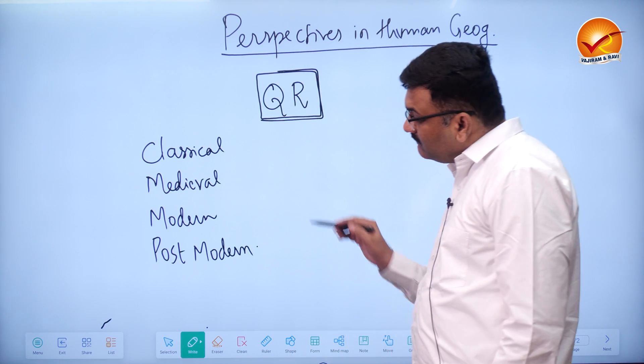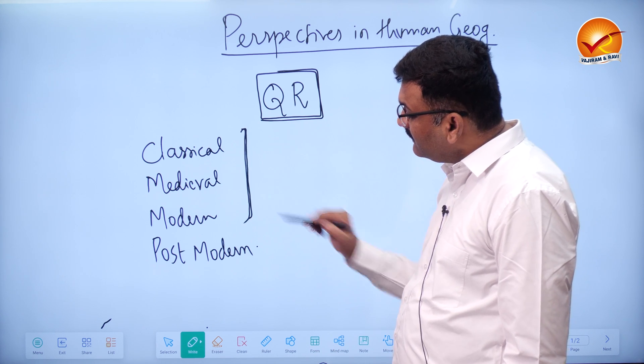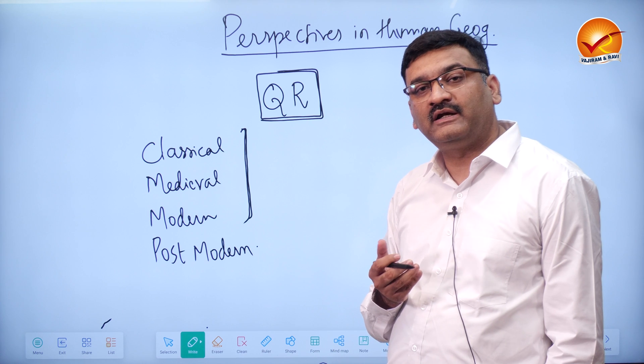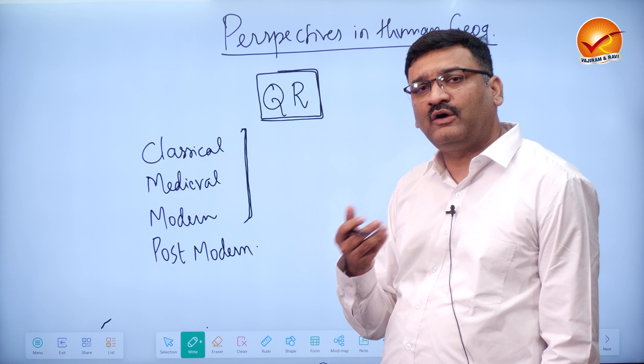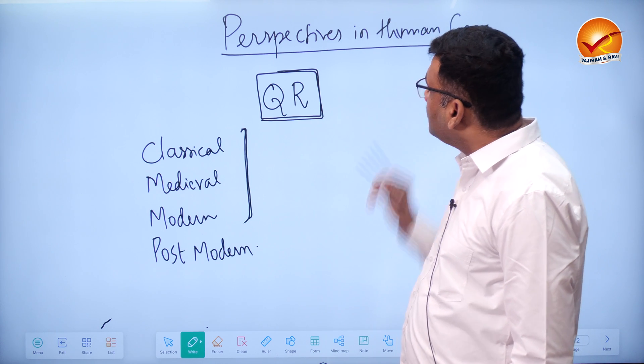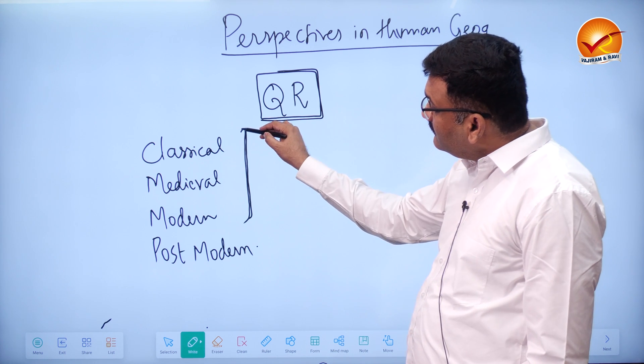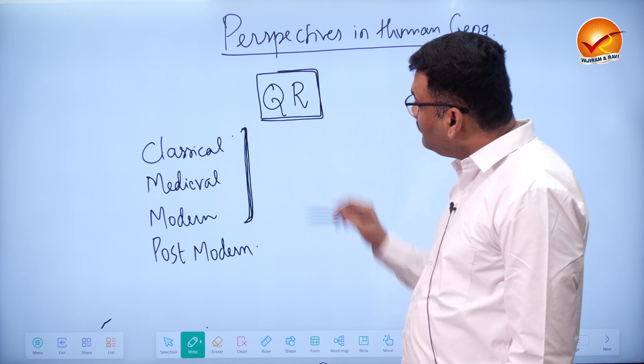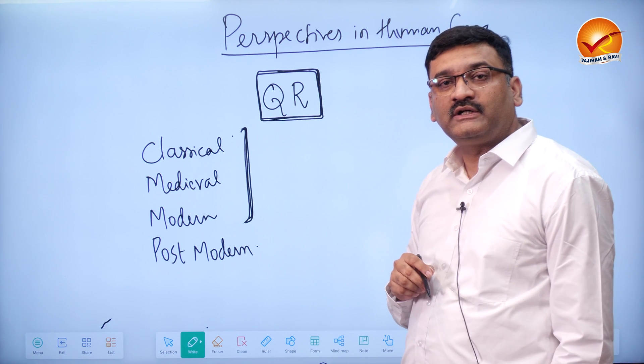This geographical thought has been contributed from different regions like Greeks, Romans, Arabs, Chinese, Indians, then Europeans. Now we have an American school of thought in geography. These perspectives of human geography have evolved over a period of time. When we study this geographical thought from classical to modern, we find one of the important milestones has been the quantitative revolution.